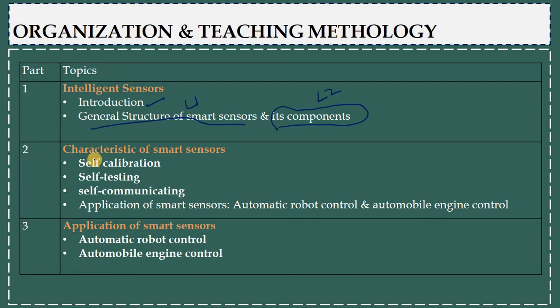This is lecture one and lecture two covers the components. After that there are various characteristics of smart sensors. The major ones are self-calibration, testing, and communication. There are two lectures for this - lecture three and lecture four for the characteristics.